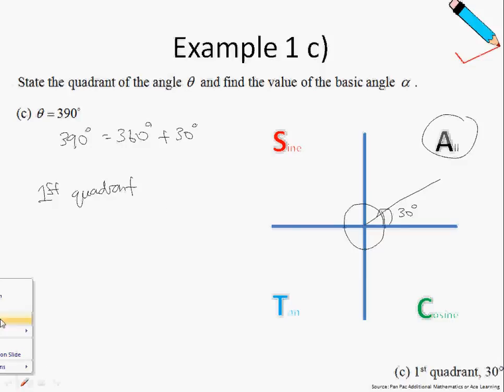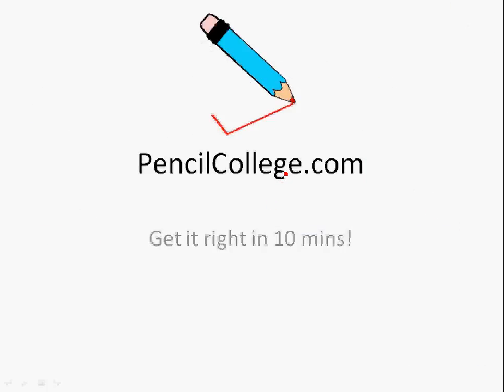What is my alpha? Alpha is always measured with respect to the horizontal axis, so alpha is here. In this case, alpha is just 30 degrees. Before moving on to more examples in the next video, I just want to thank you for watching, and for more videos please log on to pencilcollege.com. See ya!